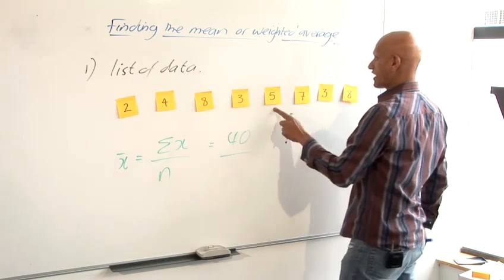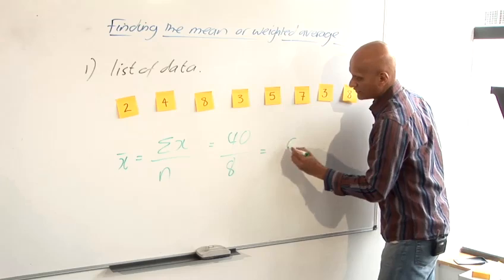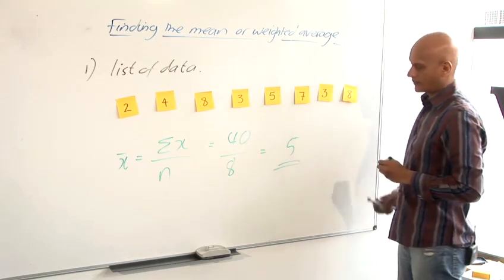1, 2, 3, 4, 5, 6, 7, 8. 40 divided by 8. And so that gives you 5 as being the mean.